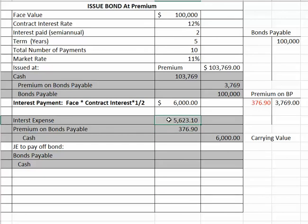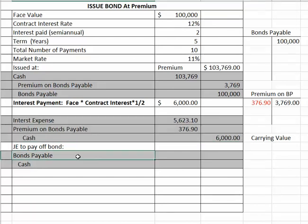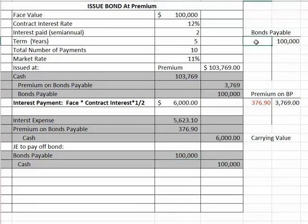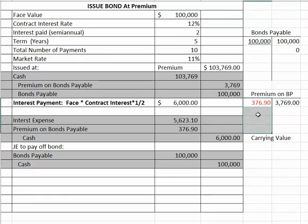When you have a premium on bonds payable, the amortization of the premium reduces interest expense. This journal entry is what you make every six months for five years every time you pay interest. Then at the end of the life of the bond, you pay off the bond by debiting bonds payable one hundred thousand and crediting cash one hundred thousand. At that point bonds payable will be zero on your balance sheet, and the premium on bonds payable will also be zero because it will be fully amortized — you took one tenth of it away each time you paid an interest payment.